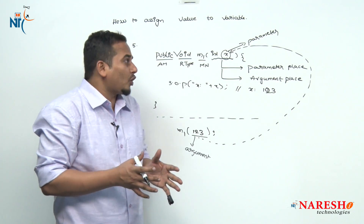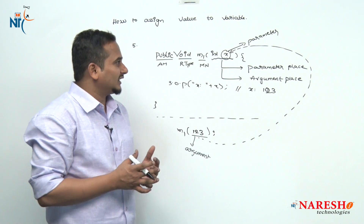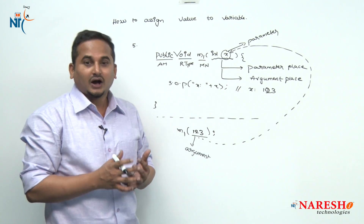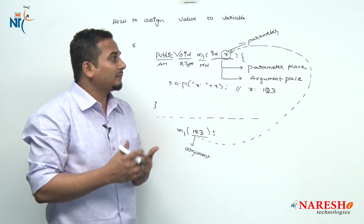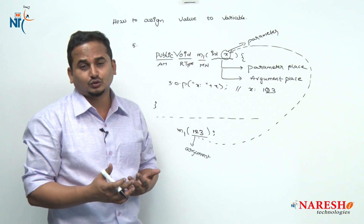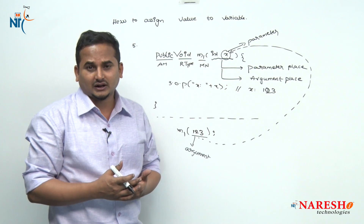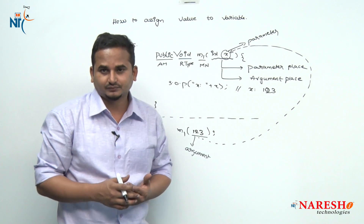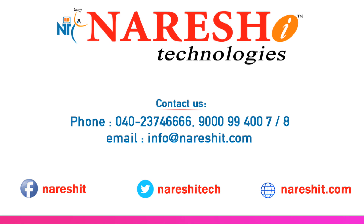These are the 5 important ways to assign a value to a variable: directly, with the help of another variable, with the help of an expression, with the help of method return type, and passing a value as an argument to a method. I hope you enjoyed this video. In remaining concepts — very important concepts related to Core Java — we will see in coming classes or videos. Thank you.